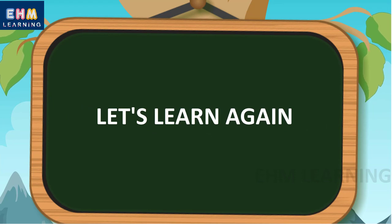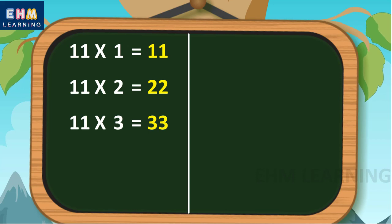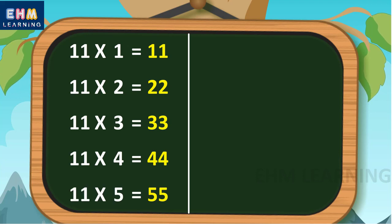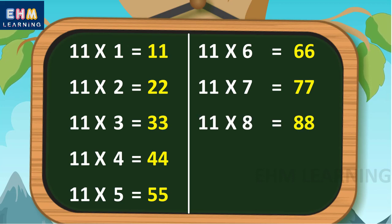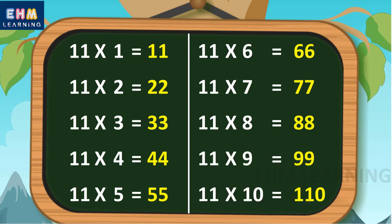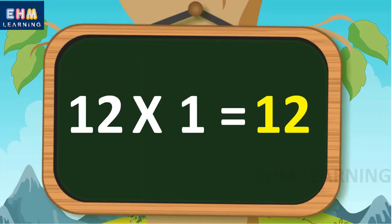Let's learn again. Eleven ones are eleven, eleven twos are twenty-two, eleven threes are thirty-three, eleven fours are forty-four, eleven fives are fifty-five, eleven sixes are sixty-six, eleven sevens are seventy-seven, eleven eights are eighty-eight, eleven nines are ninety-nine, eleven tens are one hundred and ten.